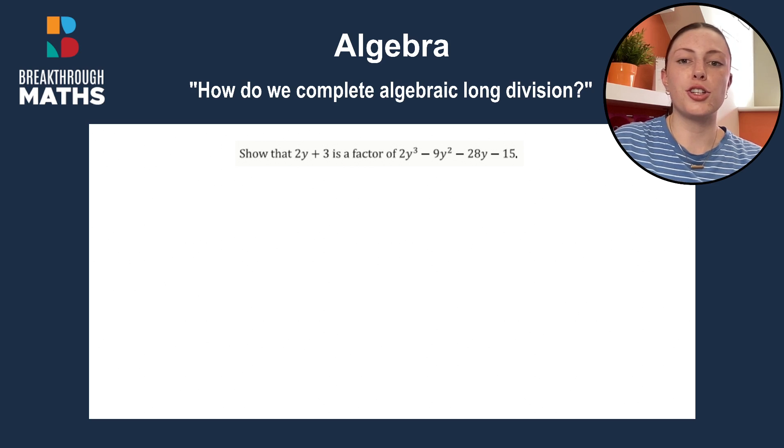So here we are asked to show that 2y plus 3 is a factor of 2y cubed minus 9y squared minus 28y minus 15.